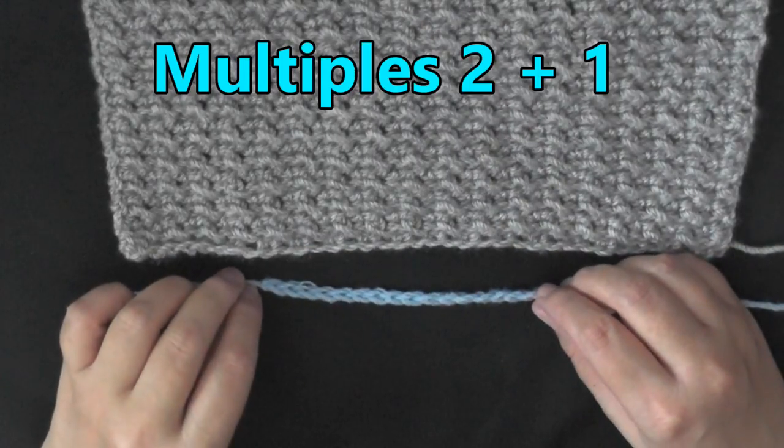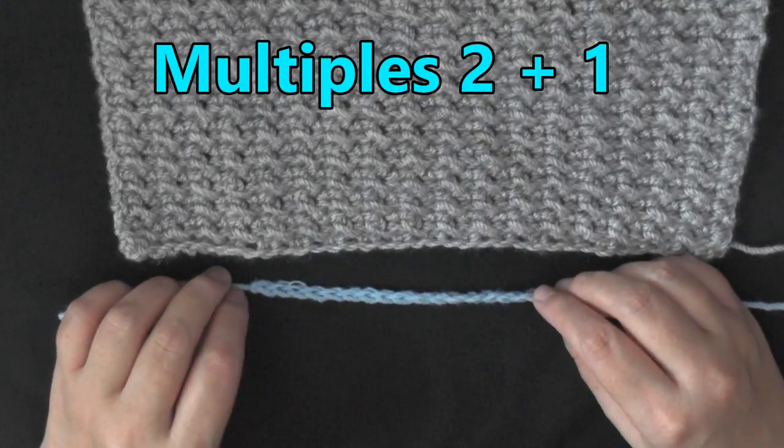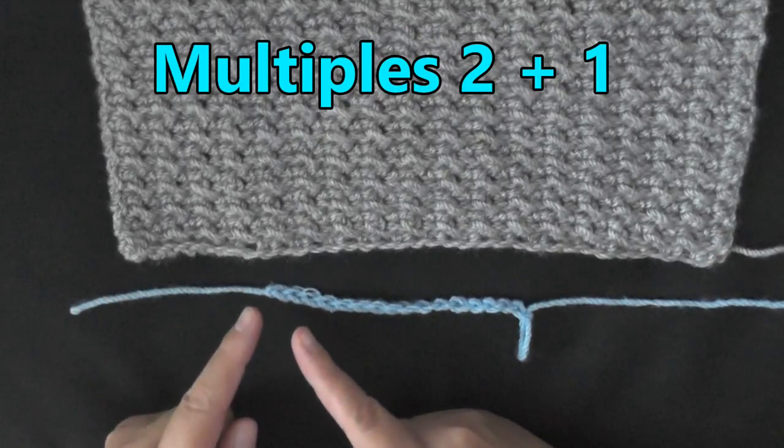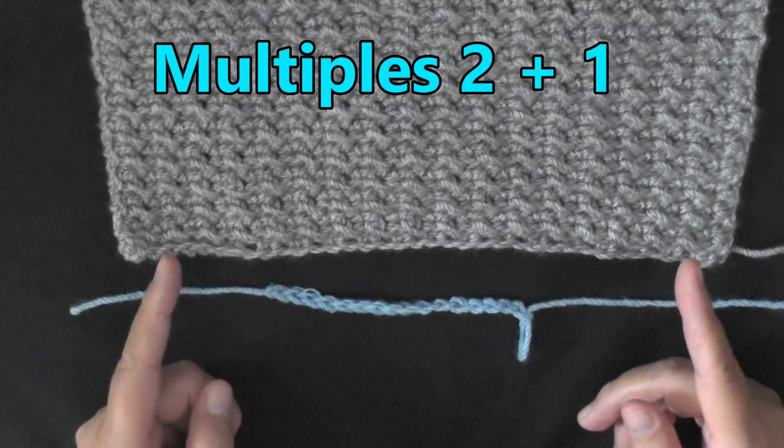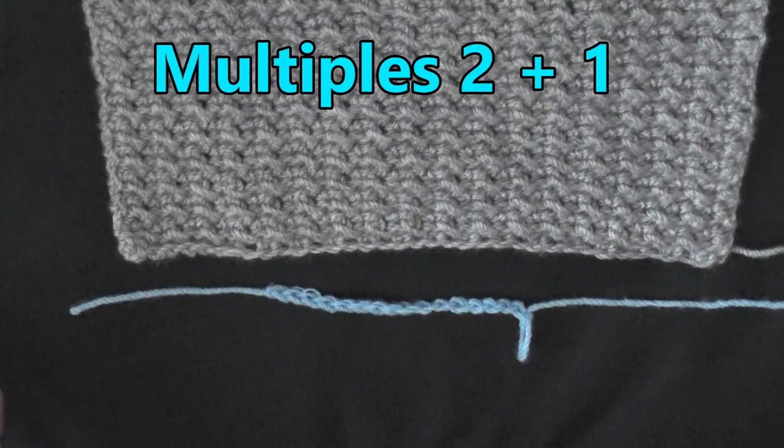The multiples of this stitch is 2 plus 1, and what that means is that you're going to be chaining in sets of 2 until you've reached your desired width, and then you'll chain one more and you're ready to start row 1.